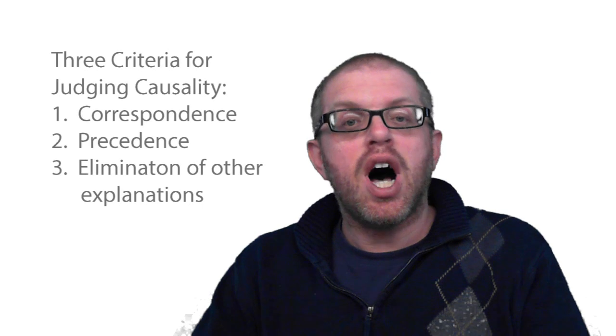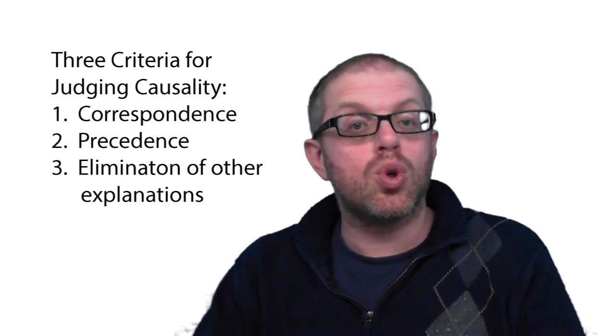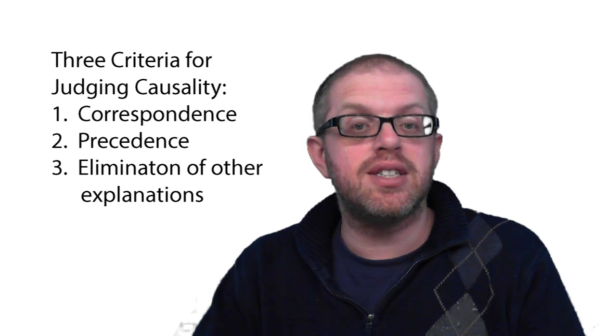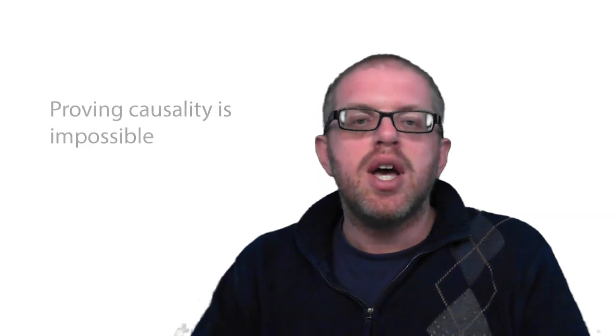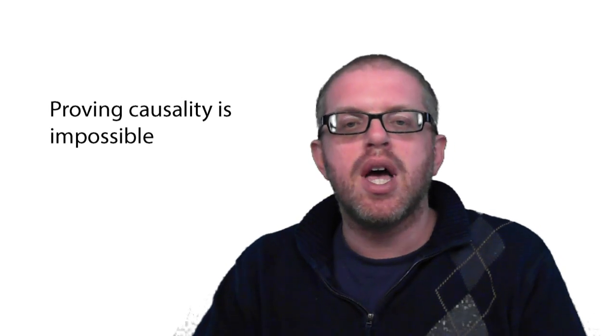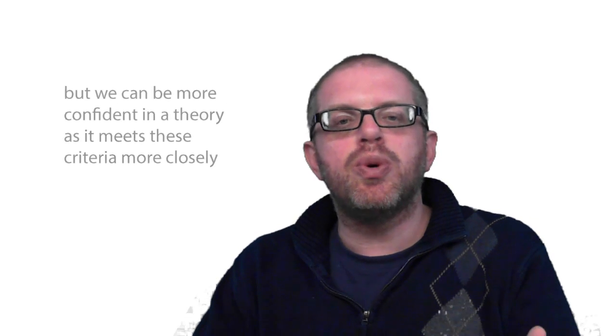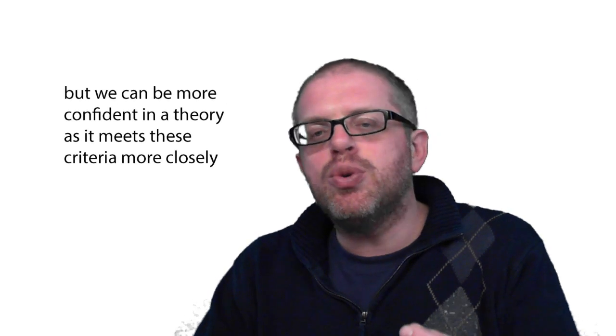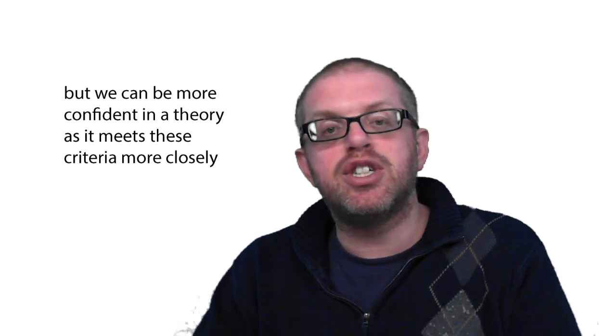In this video, I'll review three criteria for judging a causal relationship: correspondence, precedence, and the elimination of alternative causes. In practice, it's impossible to prove causality. But these three criteria give us an ideal towards which we can strive. The closer we come to meeting them, the more confident we can be that a causal relationship exists.